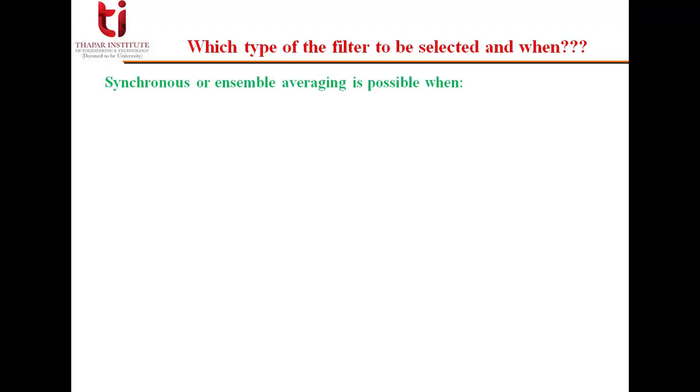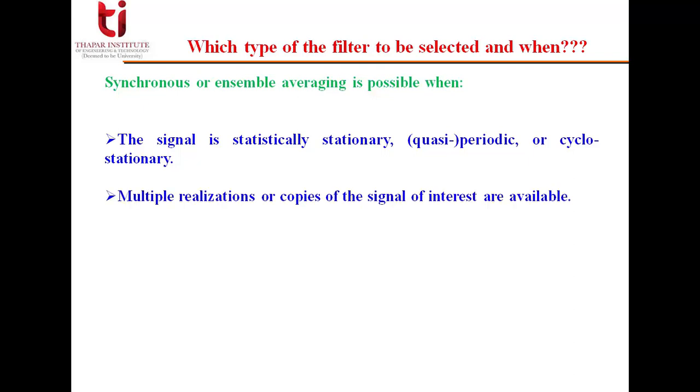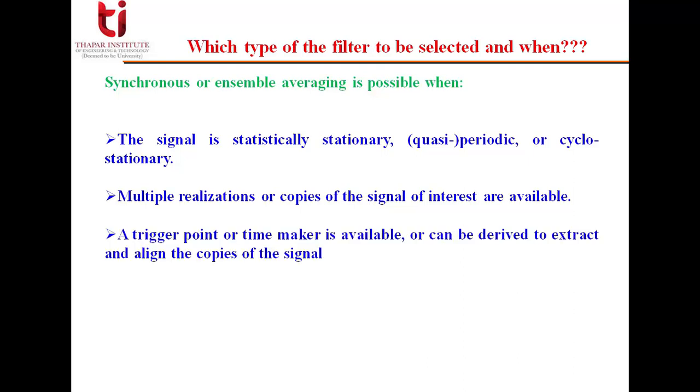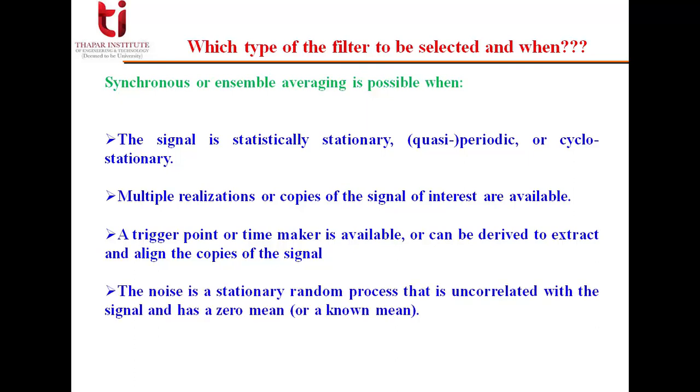Starting with the synchronous or ensemble averaging, it is possible when the signal is statistically stationary, quasi-periodic or cyclostationary. Multiple realizations or copies of the signal of interest are available. A trigger point or time marker is available or can be derived to extract and align the copies of the signal, as triggering and aligning of that particular point is very important in synchronous averaging. The noise is a stationary random process that is uncorrelated with the signal and has a zero mean or a particular known mean.